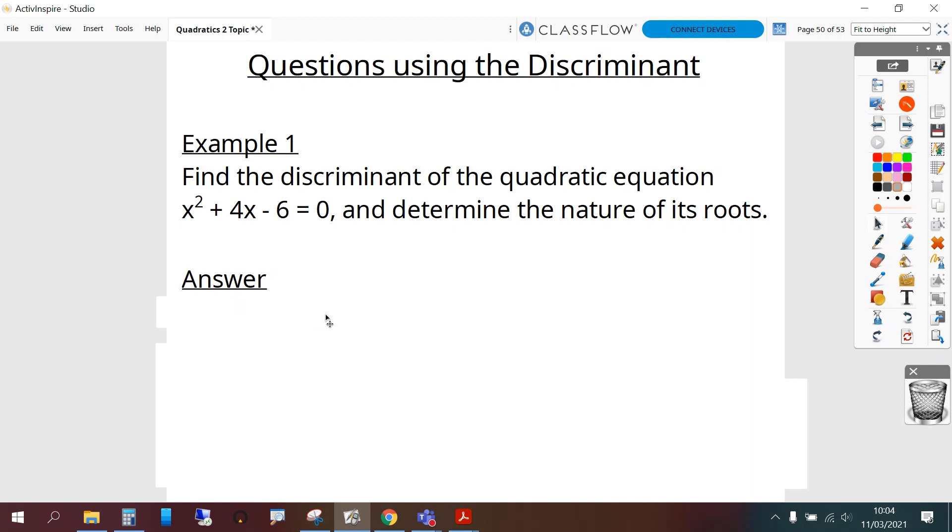So we can pick out the a, b and c values. a is 1, b is 4, c is negative 6. And we put these into the discriminant. So there's the discriminant b squared minus 4ac. Substituting a, b and c in gives us 16, and we've got two negatives, and that gives you 40.